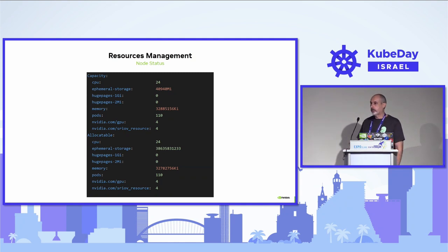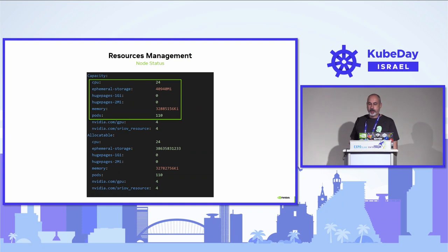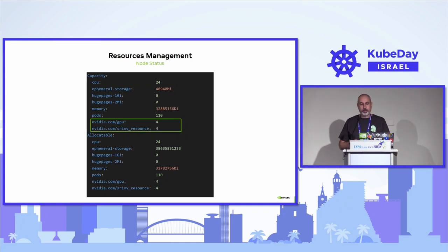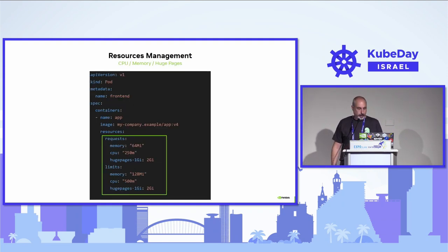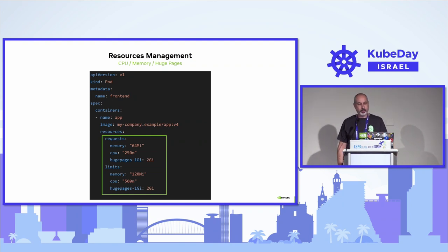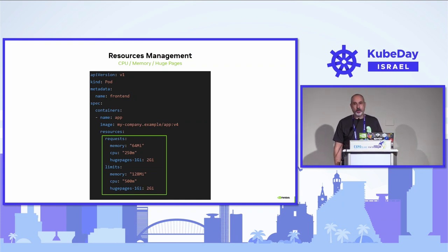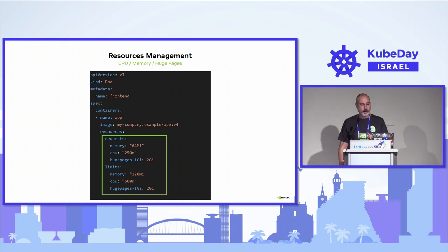Kubelet is in charge of reporting the node status and reporting available resources. You can see built-in resources like CPU, utilities, and memory, as well as examples of device plugin resources. When allocating CPU, memory, and utilities, under the spec of your pod under each container you have two sections: request and limit. The scheduler looks at the request and searches for a node with enough resources to answer it, deciding where the pod will be scheduled.